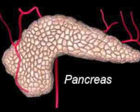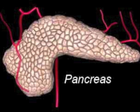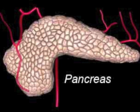Pancreatic juice also contains trypsinogen, which is secreted by the pancreas and once in the small intestine becomes trypsin, acting on proteins and converting them into polypeptides. It also contains chymotrypsin and carboxypeptidase, which help digest proteins, and nucleases, which help digest nucleic acids.